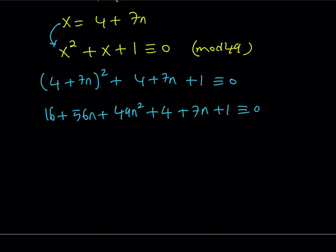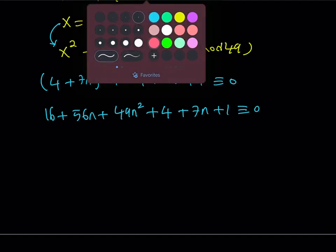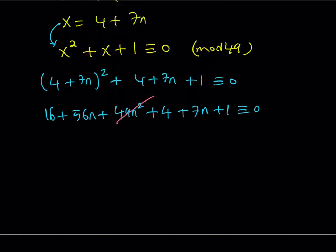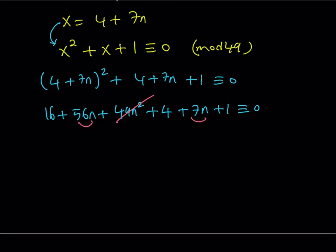16 + 56n + 49n². Does that look familiar? We had that before and we canceled it out. So this is supposed to be 0 (mod 49), and obviously here, this is going to be 0 (mod 49), and then let's put everything else together. 56n + 7n, that's going to make 63n, and 16 + 4 + 1 is going to make 21. And this is congruent to 0 (mod 49).